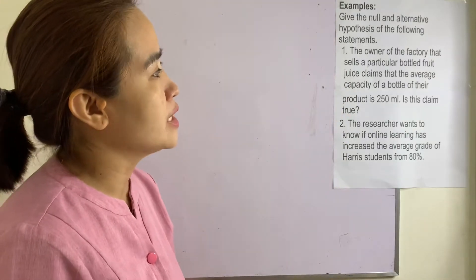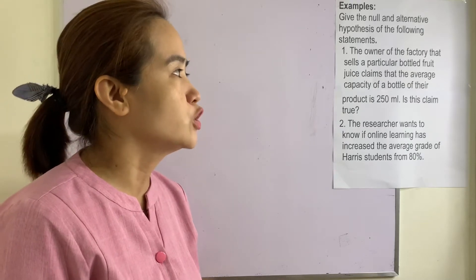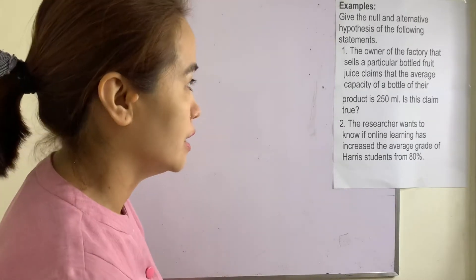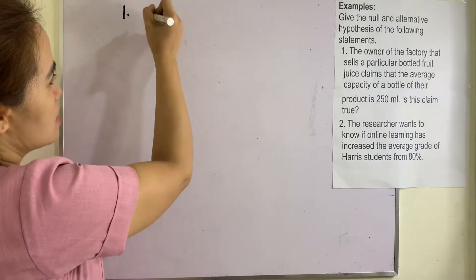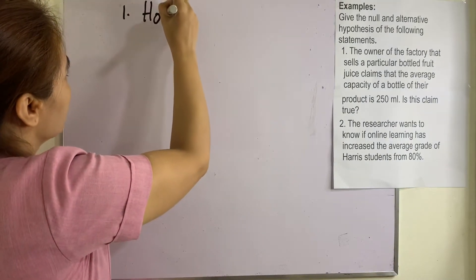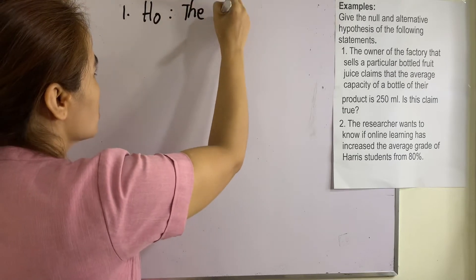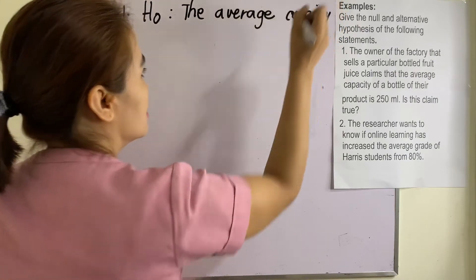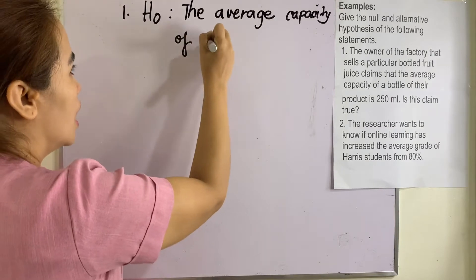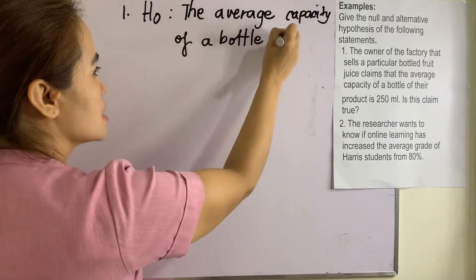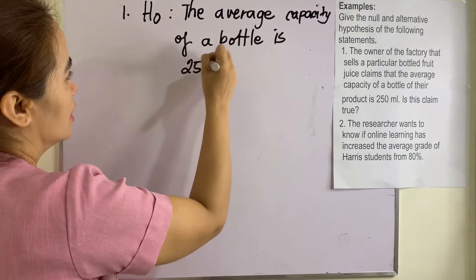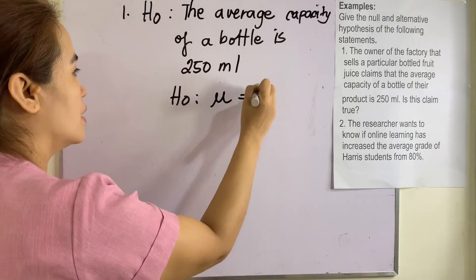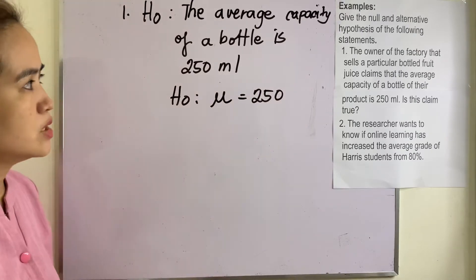Number one: the owner of a factory that sells a particular bottled fruit juice claims that the average capacity of a bottle of their product is 250 ml. Is this claim true? So we have the null hypothesis: the average capacity of a bottle is 250 ml. In symbol, mu is equal to 250 ml, because of the word 'is,' so that is equals.